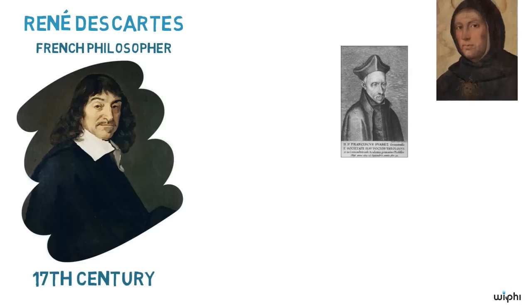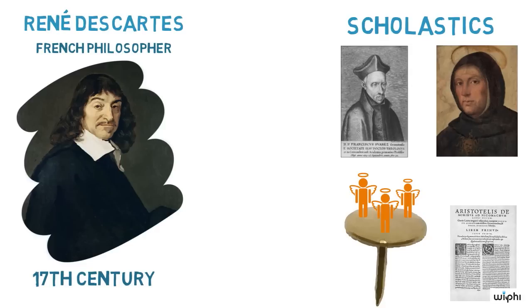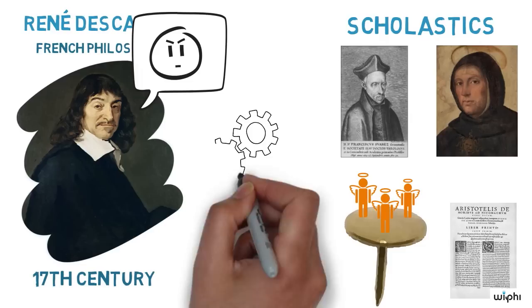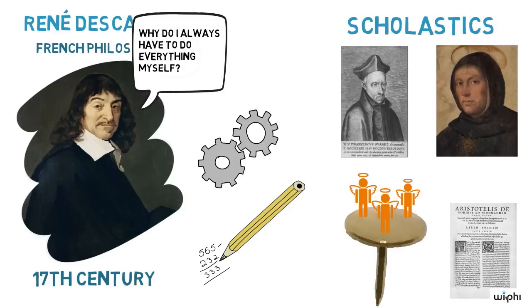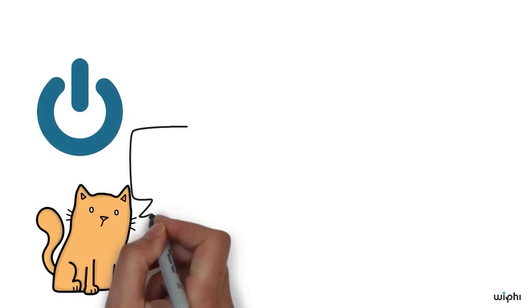René Descartes was a French philosopher of the 17th century. He was dissatisfied with the philosophy of his time, which was dominated by scholastic philosophy. Descartes was dissatisfied with this kind of philosophy because he considered their highly abstract disputes pointless and futile, and also unable to accommodate the results of the rising mechanistic physics. On account of his dissatisfaction, Descartes came to think that philosophy was in need of a fundamental reboot, a completely fresh start.